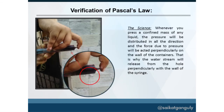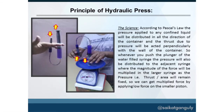The second experiment is verification of Pascal's law. There is a small hole in the wall of the syringe. Whenever you push the plunger, a stream of water comes out perpendicularly to the tangent of the curved surface of the syringe, thereby verifying Pascal's law — the principle underlying hydraulics.